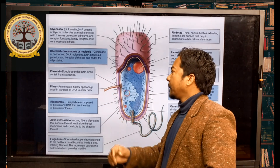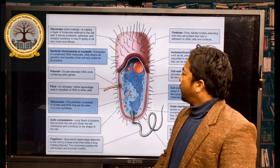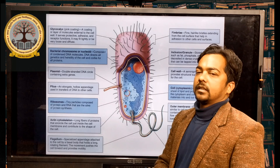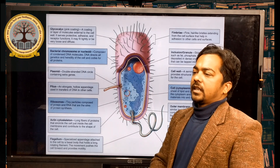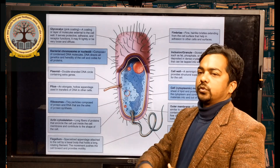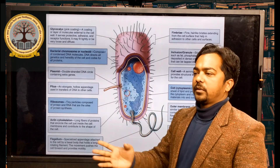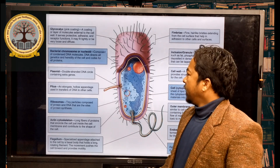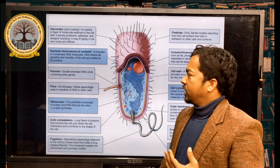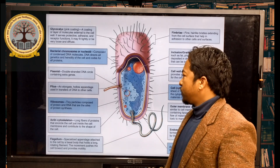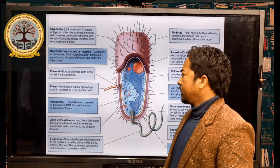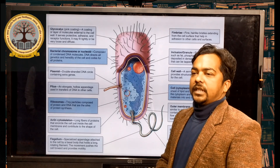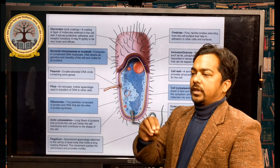Another structure is the pilus. Its function is for conjugation — bacteria transfer genetic material from one bacterium to another. Pilus is an elongated, hollow appendage used for the passage of DNA to another cell. An important part of every gene is that the final product is protein.